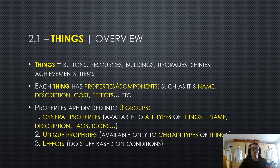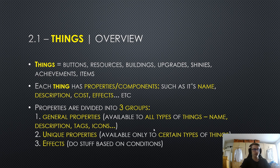Each thing has properties and components such as its name, description, cost, effects and so on. These properties are divided into three groups. The first group are general properties which are available to all types of things. For example, this is the name of our thing, the description, tags, icons, etc.